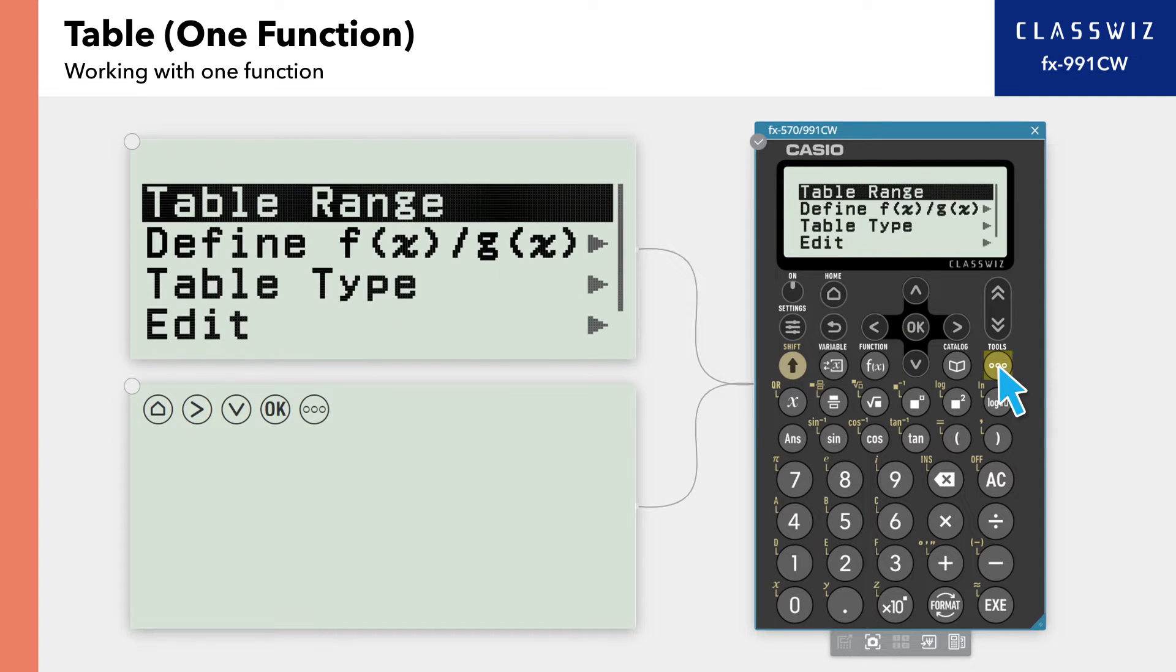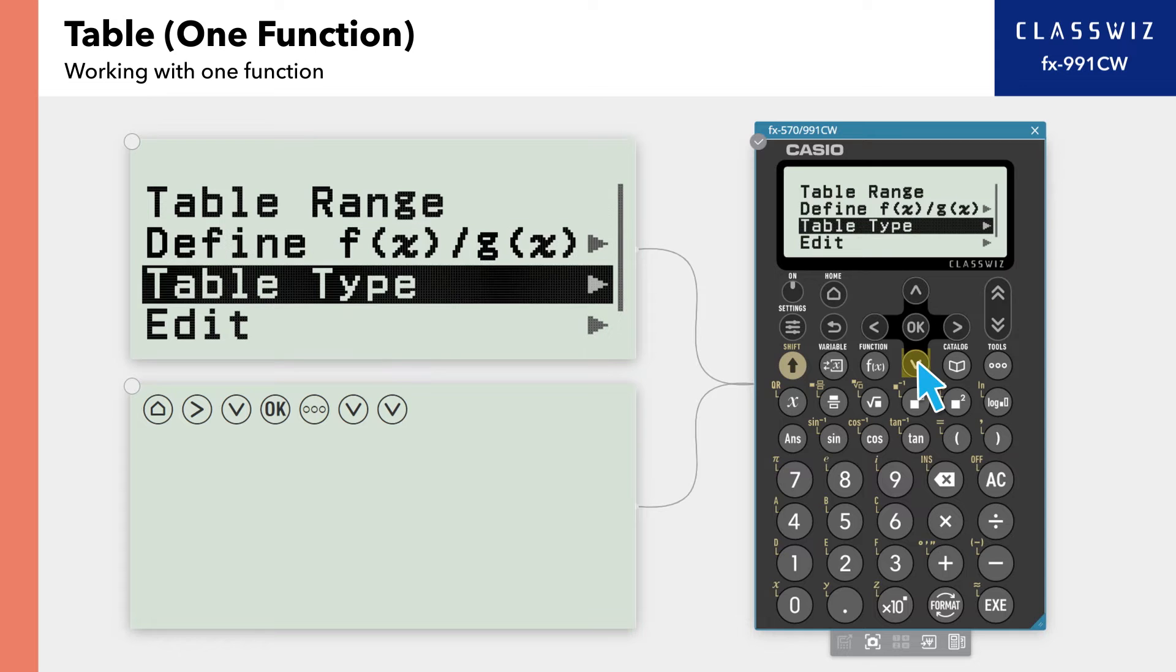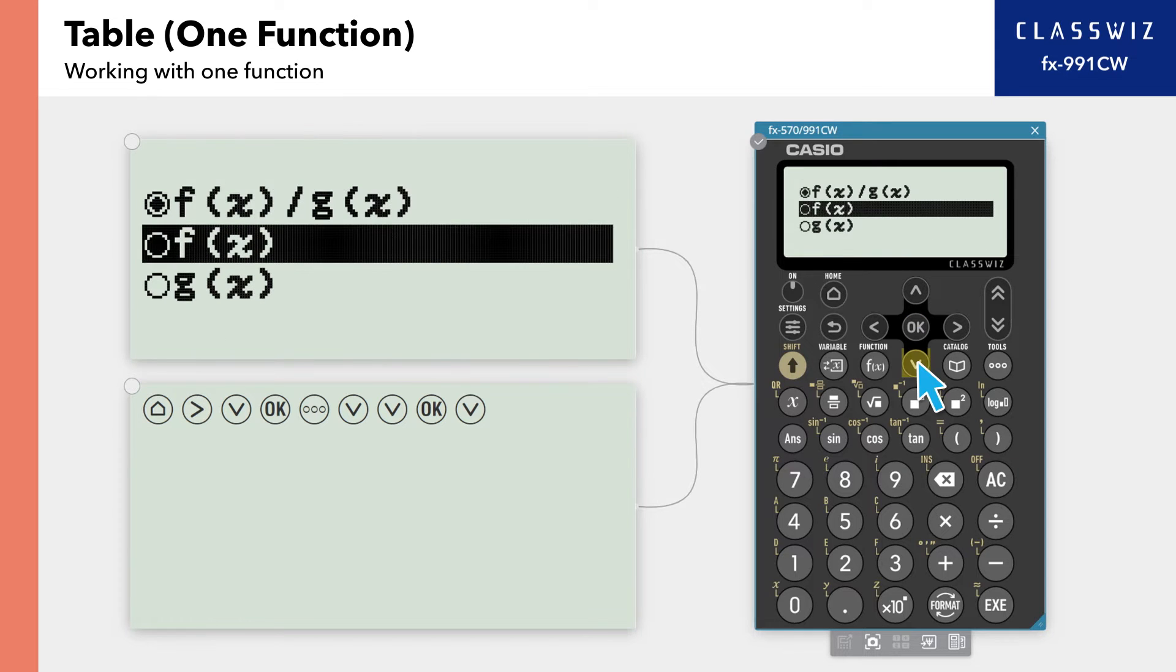Press Tools, then select Table Type. Select Fx.